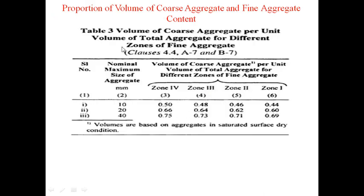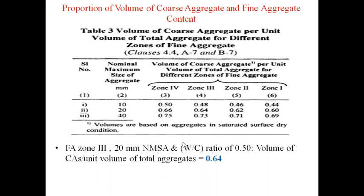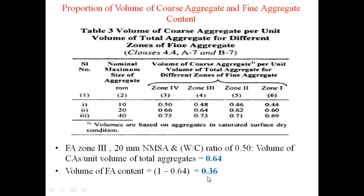Proportion of volume of coarse and fine aggregate: Table from IS 10262:2009 states that for a nominal maximum aggregate size of 20 mm and zone 3 sand, the volume of coarse aggregate per unit volume of total aggregate is 0.64. This table is applicable when the water-cement ratio is 0.5, which matches our design. Volume of fine aggregate = 1 − 0.64 = 0.36.